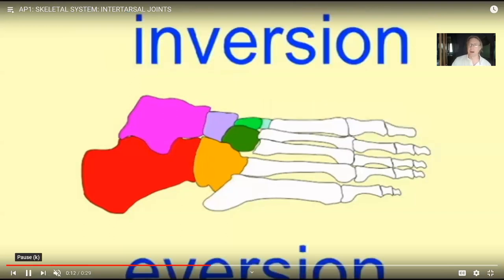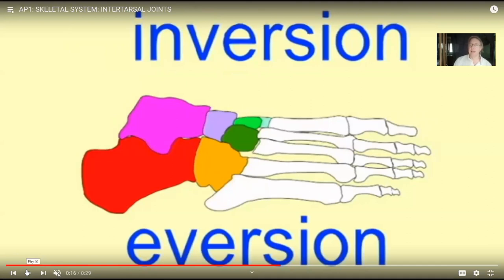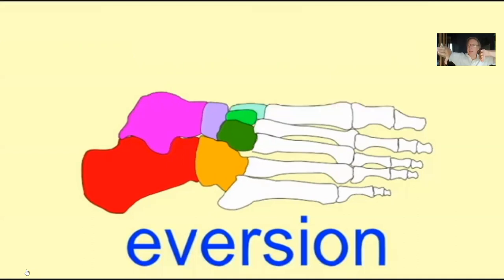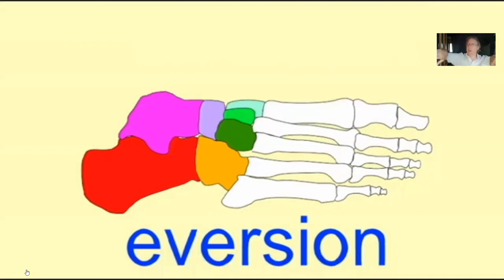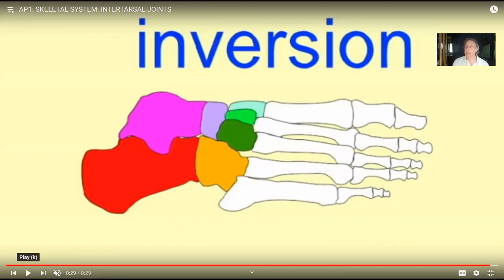If you ask what type of motion we see at planar joints, in the wrist we see a gliding motion. Here in the foot, we give it a special name. If I take my foot and allow the gliding between the intertarsal joints so that the bottoms of my feet face the midline, that is known as inversion. If the bottoms of my feet face away from the midline, that is known as eversion. So while in some places we call the motion gliding — gliding between the vertebral joints, gliding in the wrist — here in the foot we refer to it as inversion and eversion.